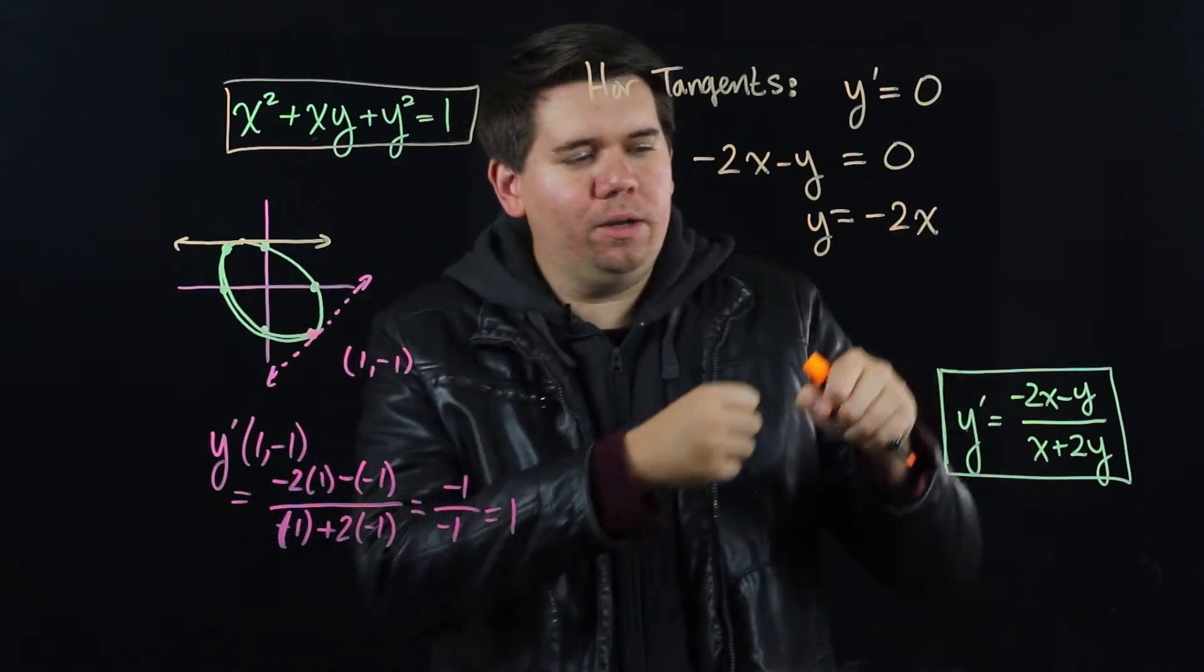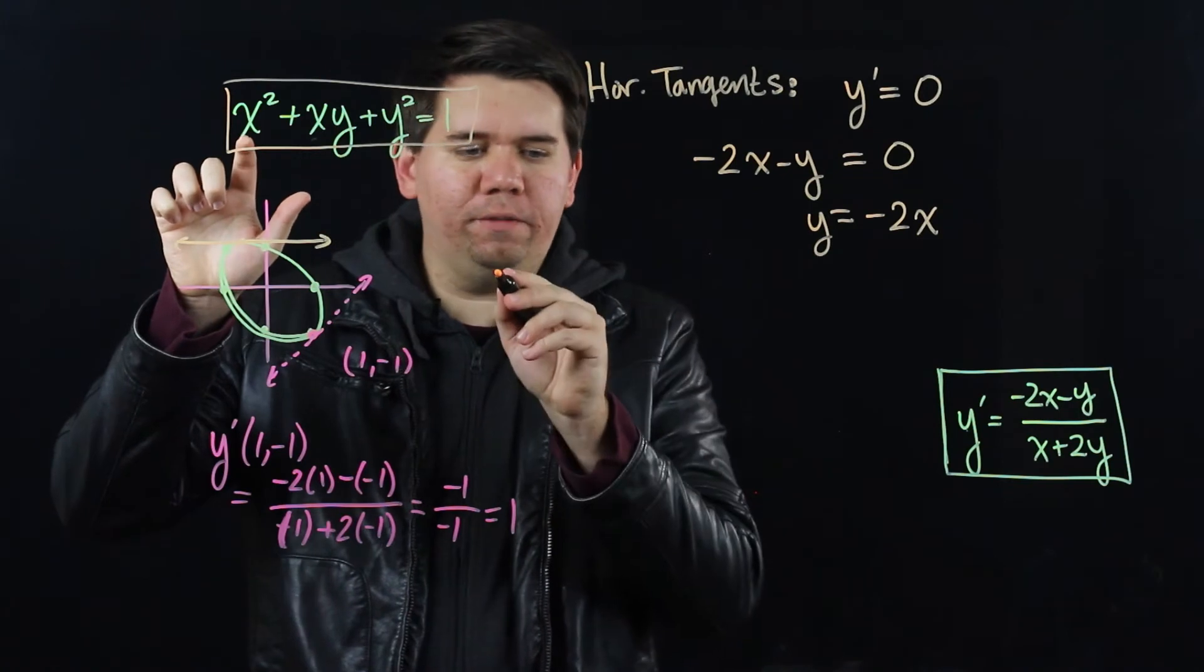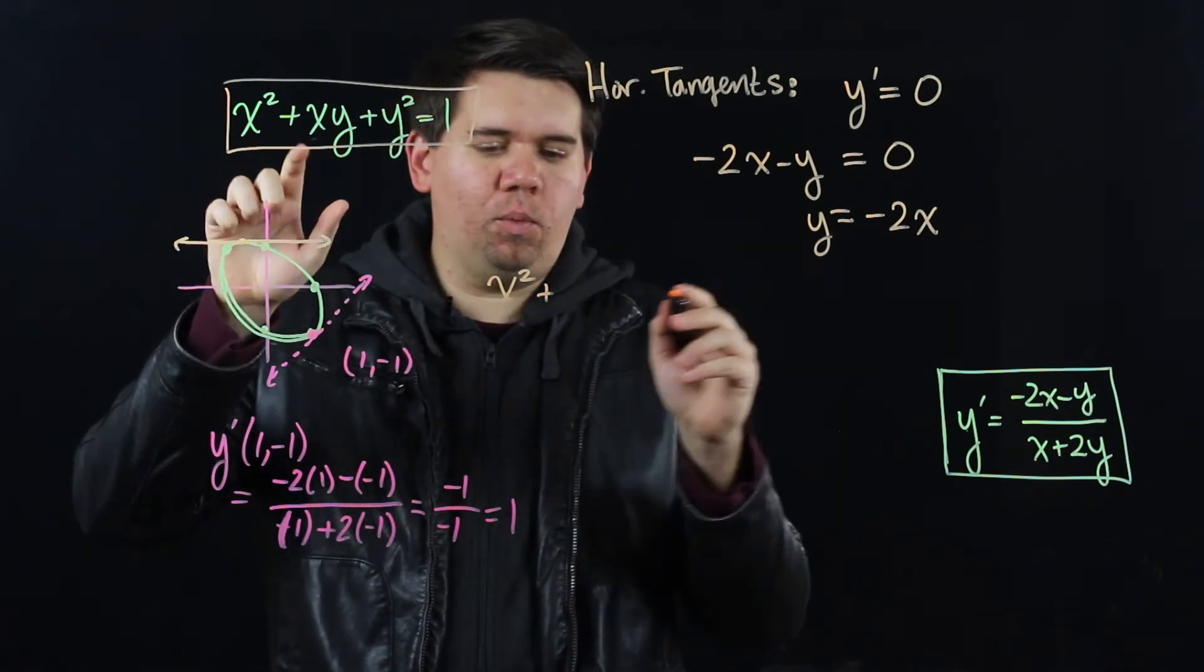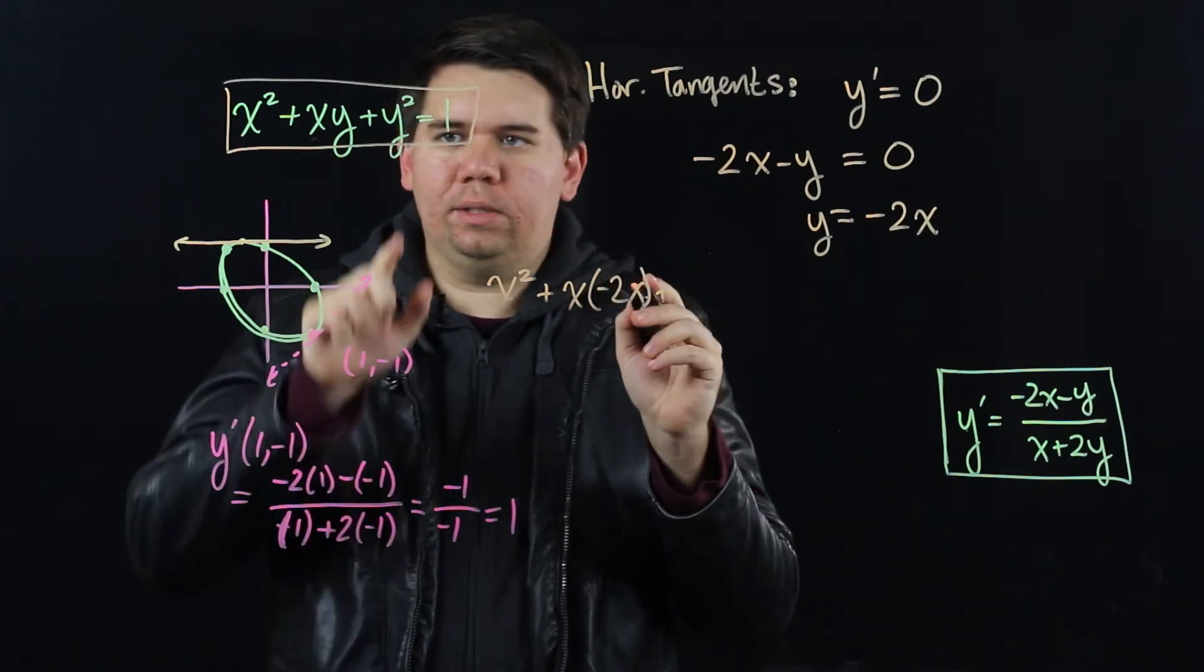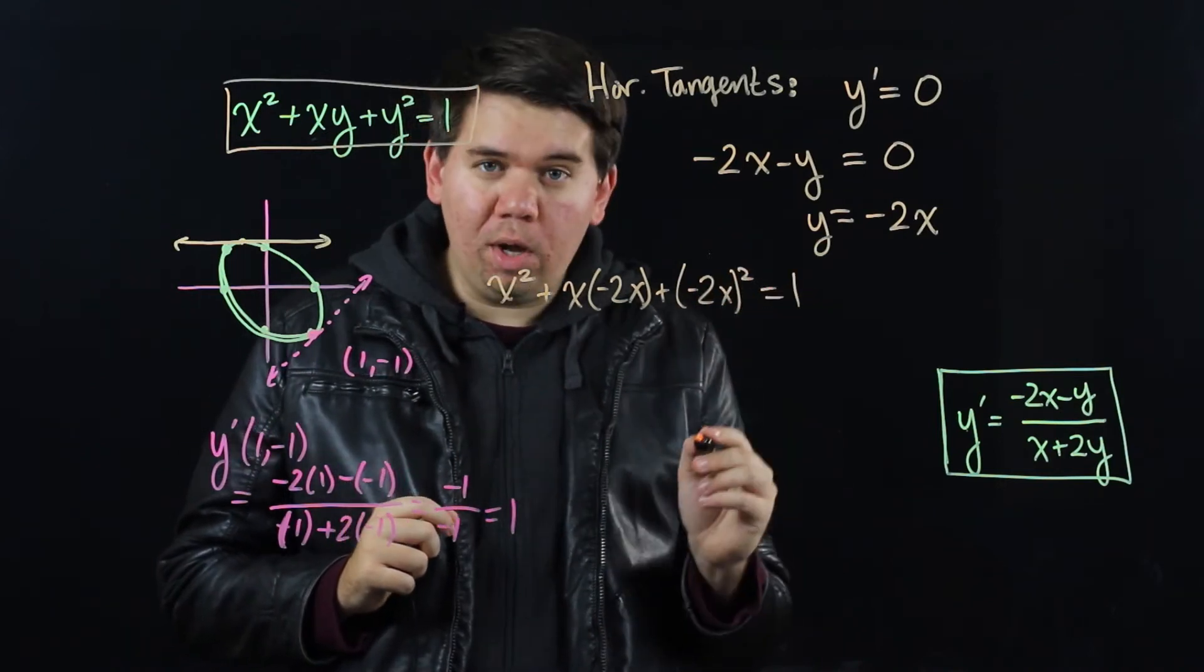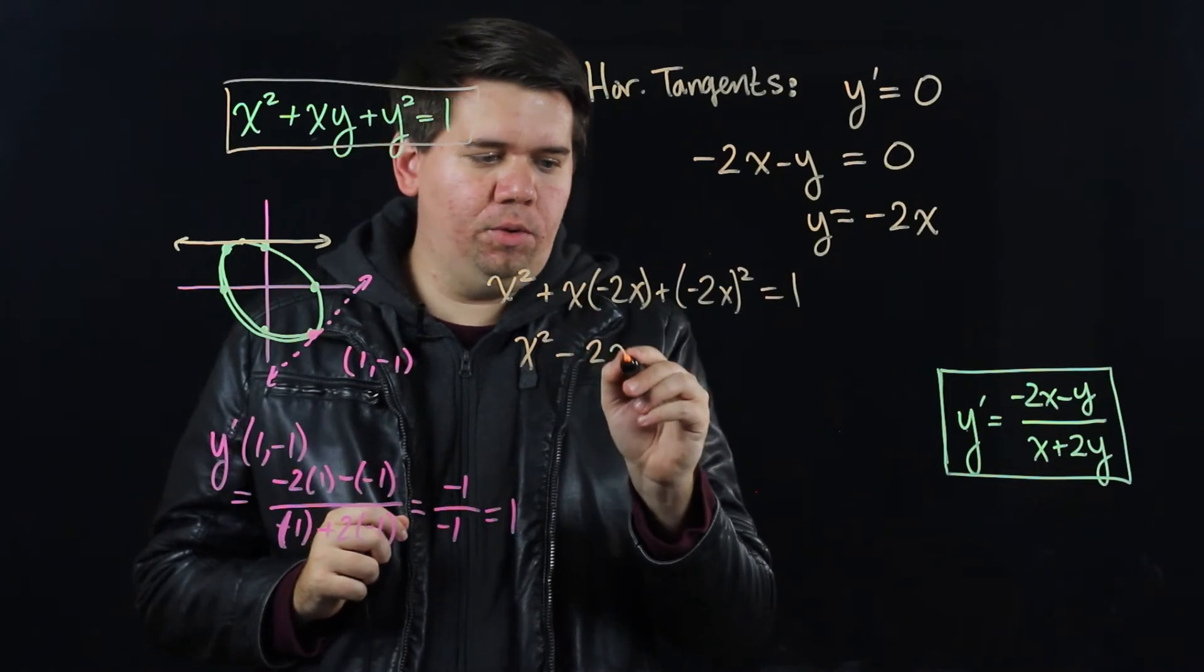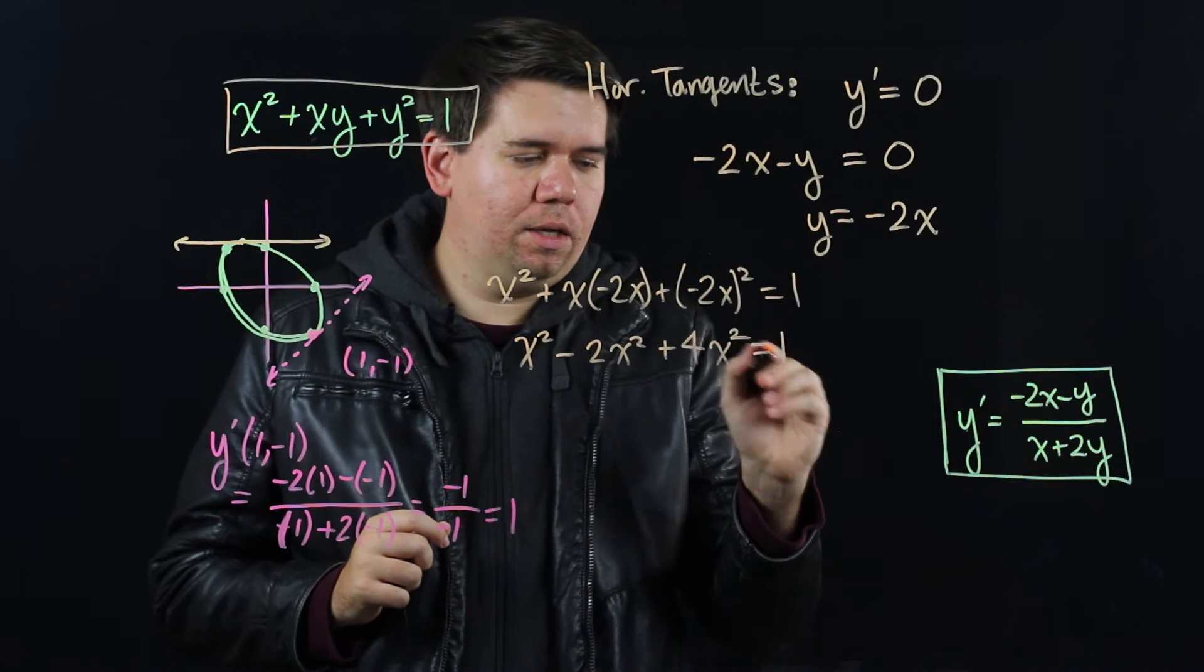So to do this, we're going to plug y equals minus 2x into the equation. Doing so gives me x squared plus x times y, so x times minus 2x plus y squared minus 2x squared equals 1. That is x squared minus 2x squared plus 4x squared equals 1.